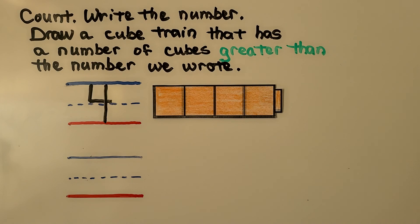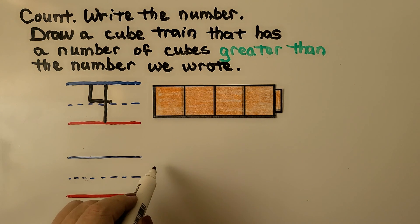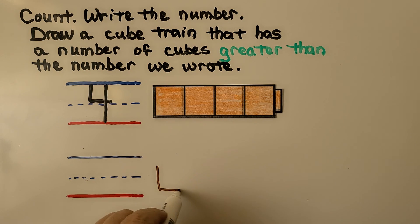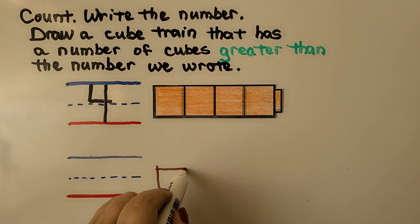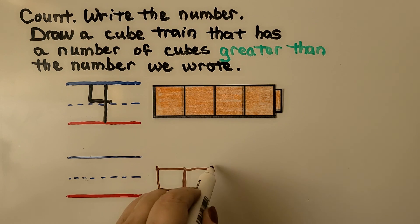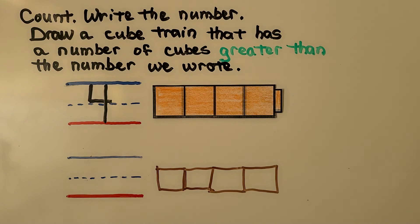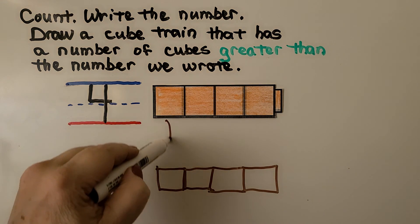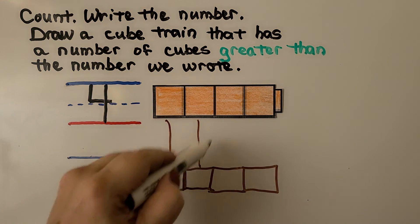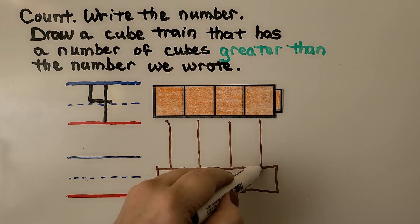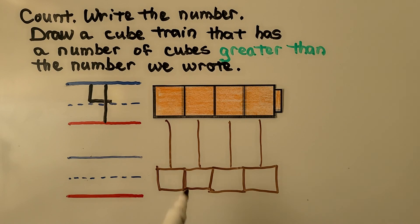We need to draw a cube train that has a number of cubes greater than the number we wrote. So we can draw squares for our cube train. It doesn't have to be a perfect drawing. Now right now these match, these match, these match, and these match. So right now we have the same number — we drew 1, 2, 3, 4.